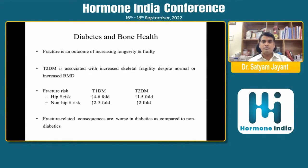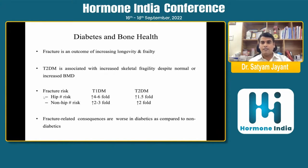Studies have revealed that fracture, whether at the hip or non-hip region, is increased in type 1 diabetes by 4 to 6 fold and 2 to 3 fold respectively, while in type 2 diabetes it is around 1.5 and 2 fold increase respectively. Fracture-related consequences are also worse in diabetic patients compared to non-diabetics.